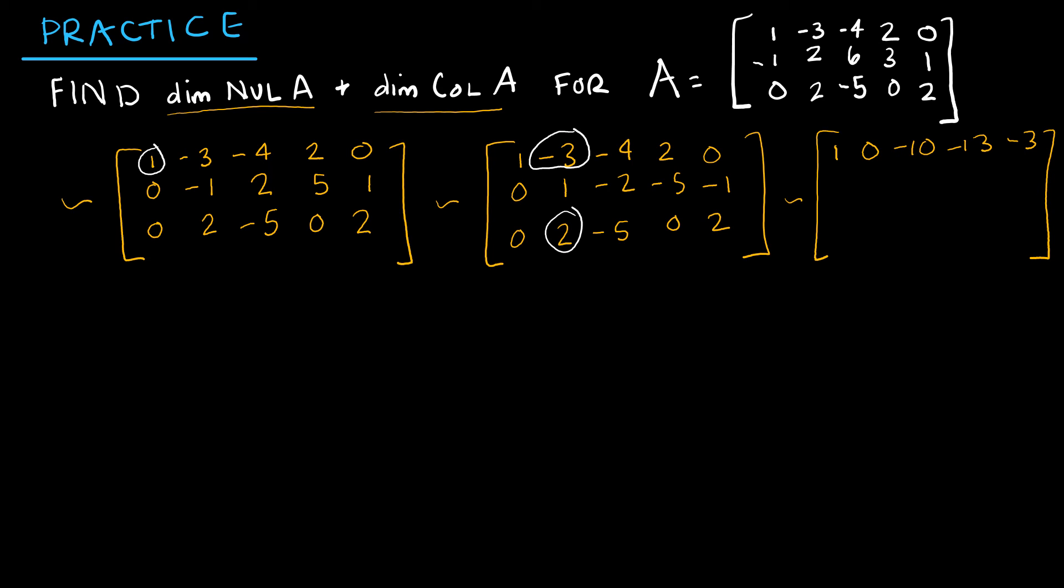And I'm going to take my second row and I'm going to take my third row and take negative 2 times row 2 and add it to row 3. So that's 0, 0, positive 4 plus negative 5, positive 10 plus 0, and positive 2 plus positive 2 is 4.